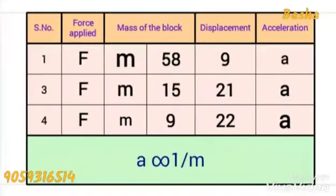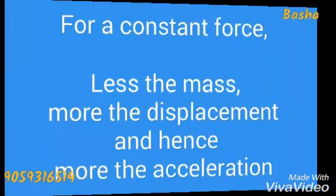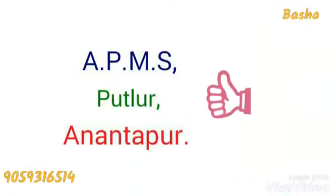Three different blocks are used for the same bob, meaning mass is decreased, and the displacement is observed to be increased. So less the mass, more the displacement, and hence more the acceleration. For a constant force, less the mass, more the displacement, and hence more the acceleration. Therefore, a is proportional to 1 by m where force is a constant.